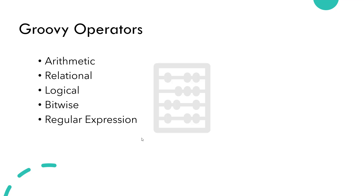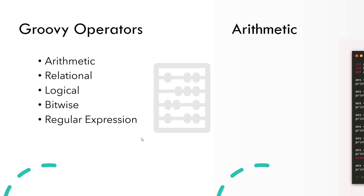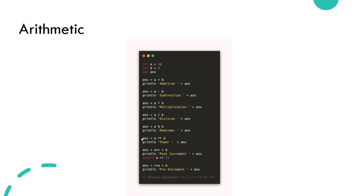There are different types of operators available in Groovy. We are not going to cover everything, but let us cover the important subset of the operators such as arithmetic, relational, logical, bitwise, and regular expression. First, we will see about arithmetic.